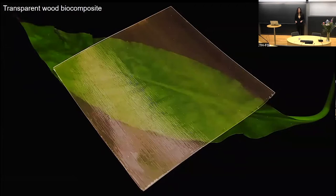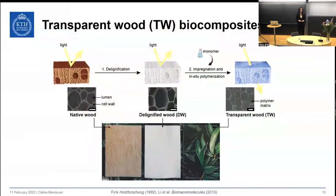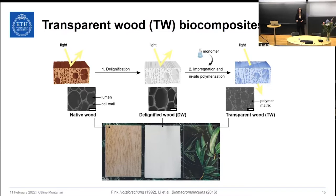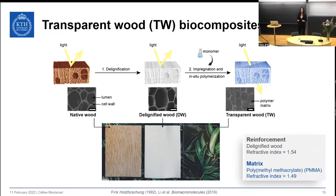Transparent wood is prepared via a two-step procedure, starting from birch or any hardwood species as a veneer. The material is first delignified to remove the light-absorbing lignin within the wood, obtaining a delignified wood substrate which is white and has a retained porous structure. A monomer can then impregnate the porous structure and in-situ polymerize to form a polymer. The final material is a biocomposite where delignified wood acts as reinforcement and a filling polymer as a matrix.